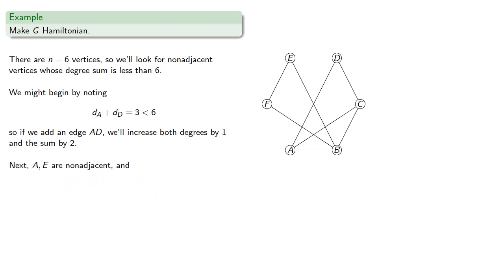Next, a and e are not adjacent, and their degree sum is five, so we'll add an edge.